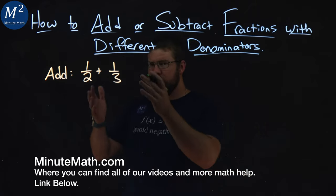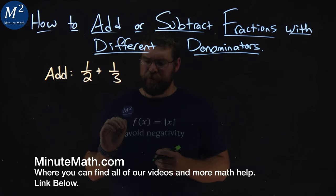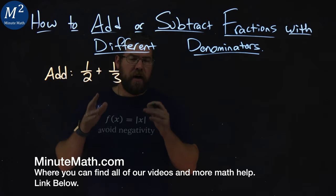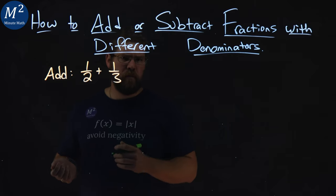We're given this fraction here to add, one-half plus one-third. We first need to find the least common denominator here. We have the two fractions, one-half and one-third.